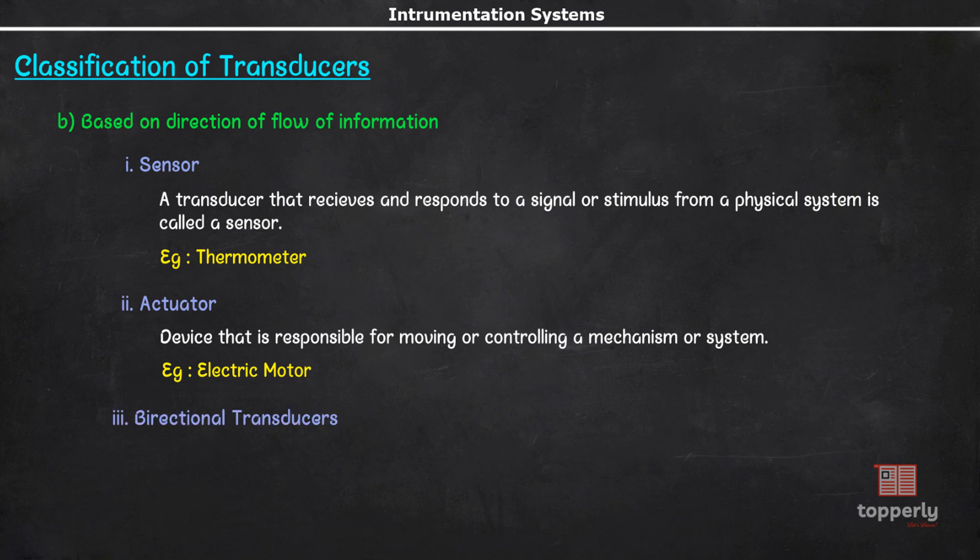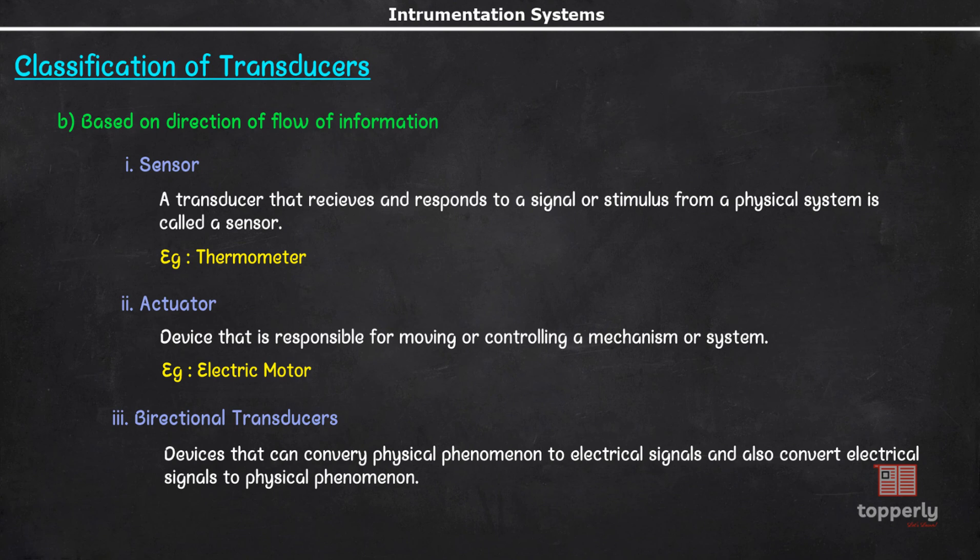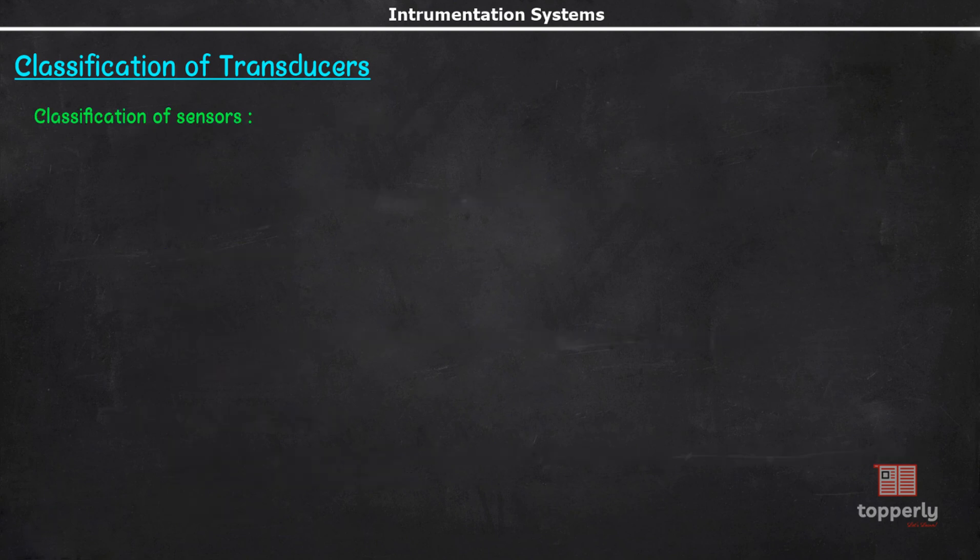Lastly, we have bi-directional transducers. These are transducers that can convert physical phenomenon into electrical signals and also convert electrical signals to physical phenomena. An example is an antenna which can convert radio waves into electrical signals and can also translate an electrical signal from a transmitter to radio waves. Now, this sensor can again be categorized into two. That is, passive sensors and active sensors.